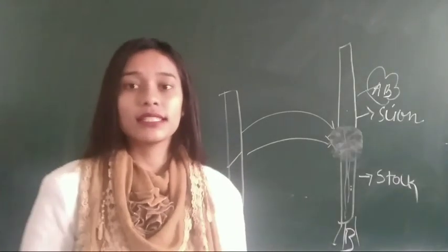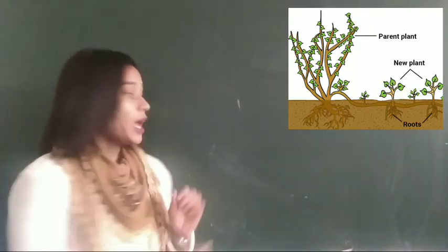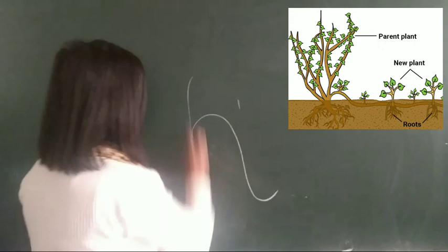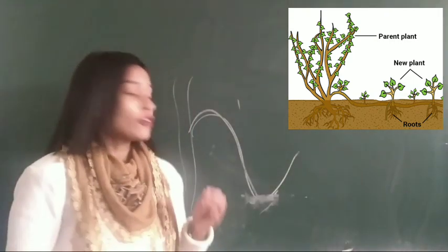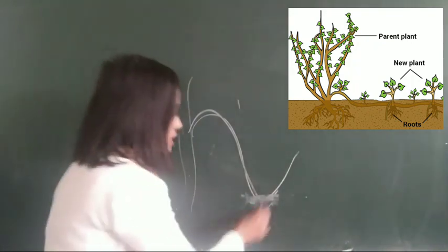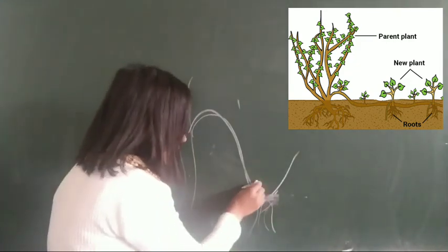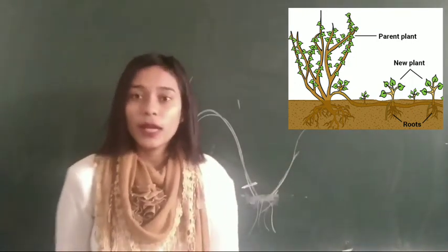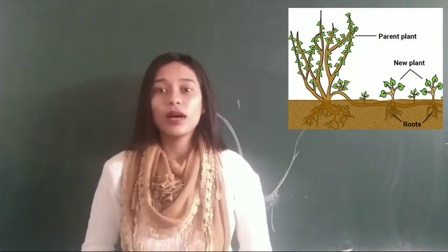Now we will discuss about layering. In some plants like bougainvillea and lemon, the branches of this plant layer down to the soil. Suppose this is the parent plant. The branches will layer down in the soil. And from soil they get food, nutrients, and moisture. That's the reason roots will grow there. So what will happen if we cut in this region? This plant will grow as a new plant. This process is called layering. So students, this is all about asexual reproduction. Our first video ends here. And we will discuss sexual reproduction in our second video. Thank you and have a good day.